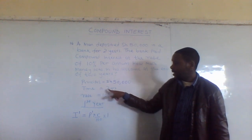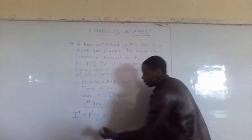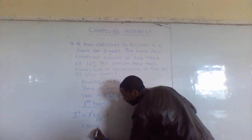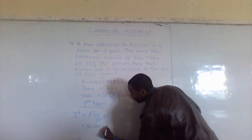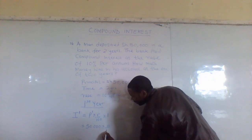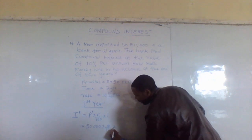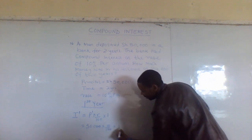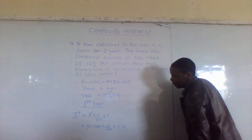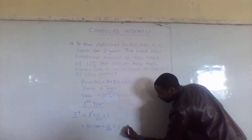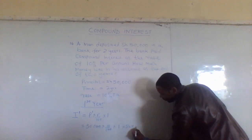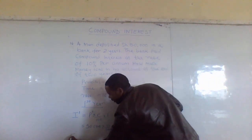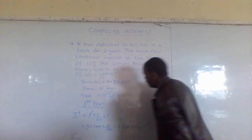So we get: 50,000 times 10 over 100 times 1, which gives us 5,000. What does this 5,000 represent? It is the interest for the first year.